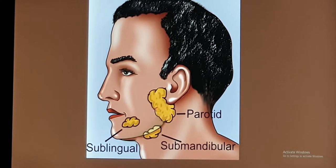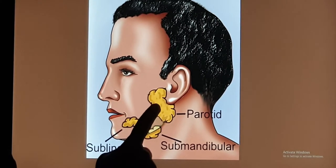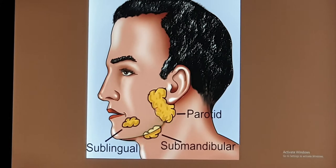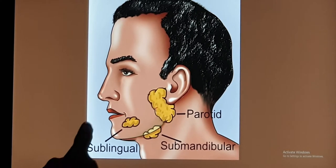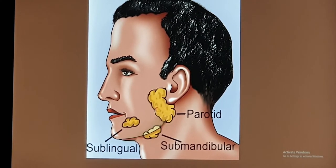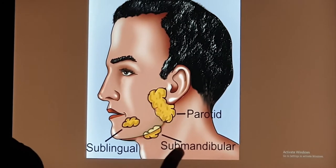The saliva produced by the salivary glands is different from each gland. The saliva from the parotid is more watery — in medical terms, it is called serous. That which comes from the sublingual is more mucus, meaning it is thick. And the saliva from the submandibular gland is a mixed type.